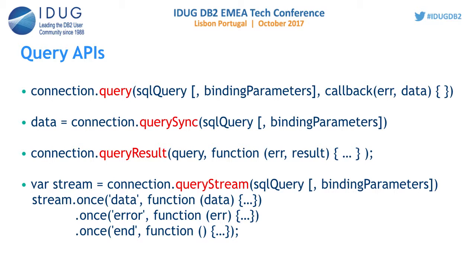These APIs do not support streaming, so we came up with a new API called queryStream which supports streaming and gives data in the form of a stream. Once you have the stream object, you can handle events based on data, error, and end, and do the processing accordingly.